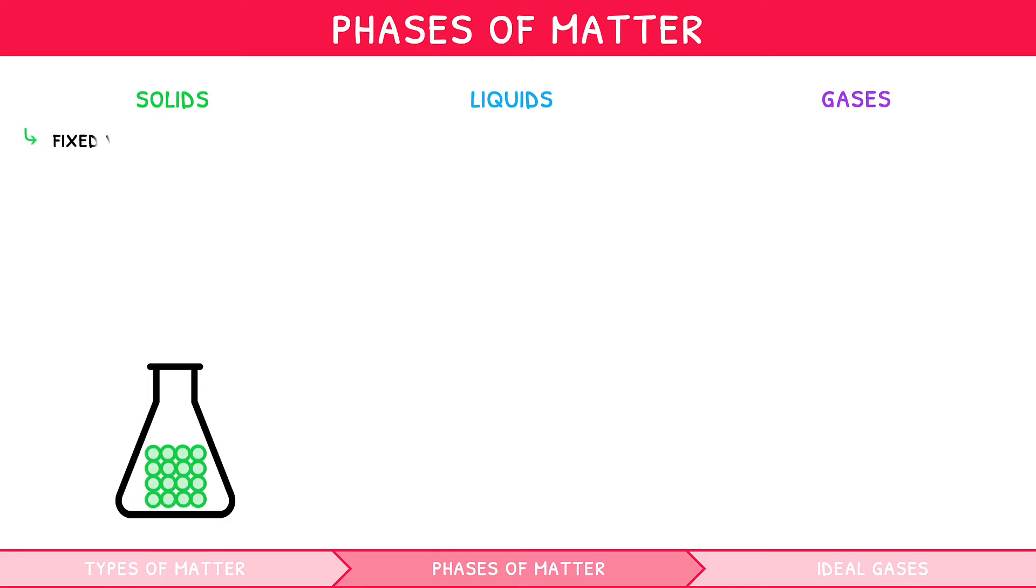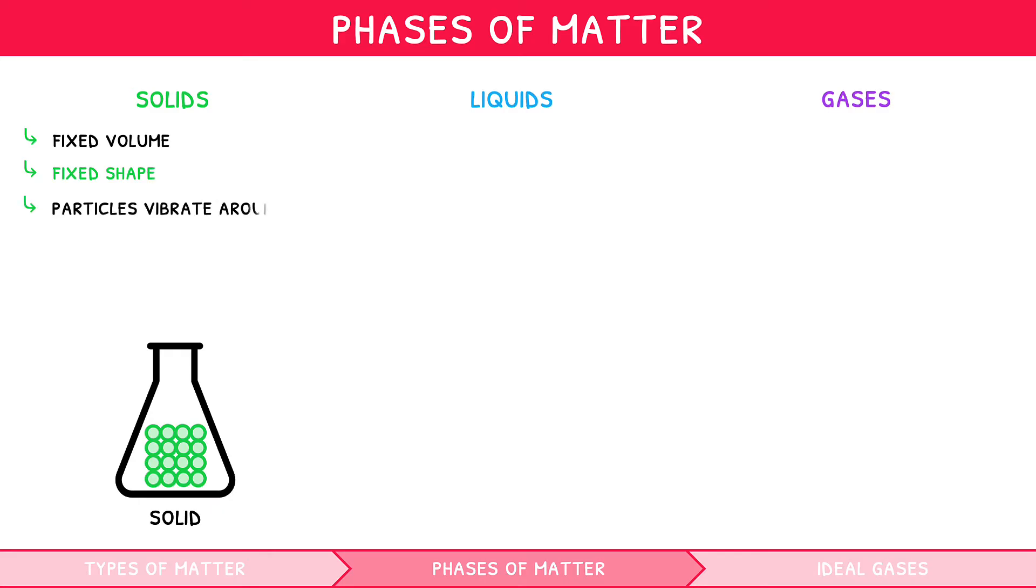Although matter can be categorized into three groups of elements, compounds and mixtures, within these groups matter can also be solid, liquid or gaseous, and interchange between these states, usually with changing temperature. Solids can be defined as having a fixed volume and a fixed shape, and as such they do not fill the shape of a container. The particles within solids vibrate around fixed positions due to strong intermolecular forces between the particles.